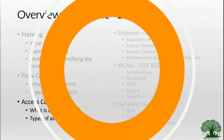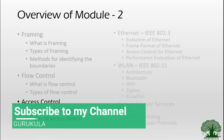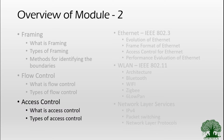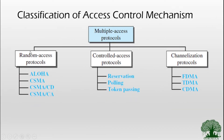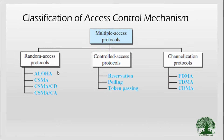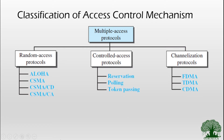In our previous videos we were talking about the access control mechanism which is deployed at the data link layer. We have seen what access control mechanism is and we are currently discussing the various types of access control mechanisms. We have completed discussing Aloha, CSMA, and CSMA CD. Here in this video we will be talking about CSMA CA.